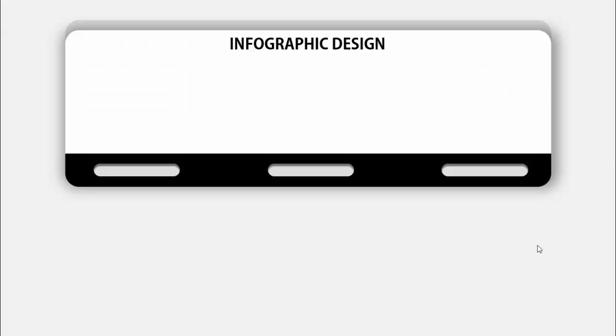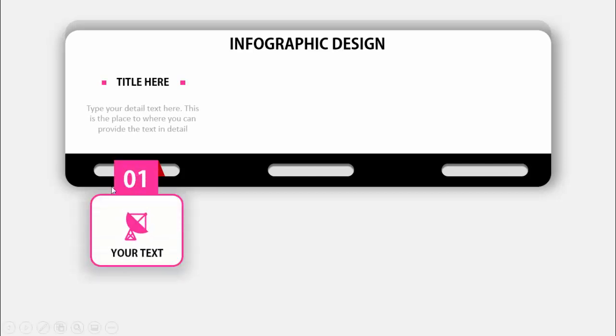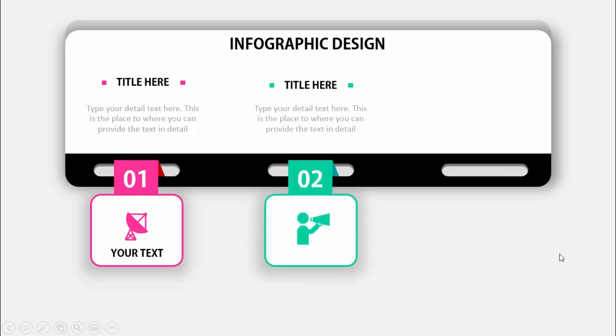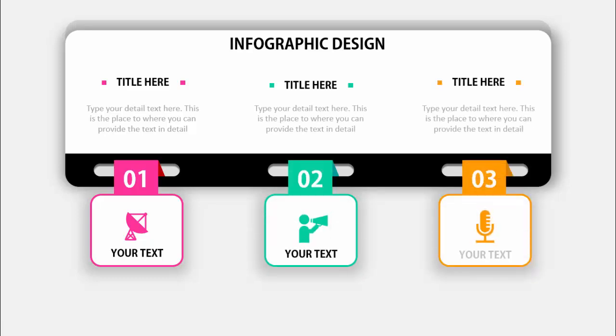Hello and welcome to my YouTube channel Powerpoint University. In this tutorial I'm going to show you how to create a three steps or three options infographic slide in PowerPoint. When I click, it will show you the first title with the detailed text and I have added an icon with some text here, and then when I click the second title or second option will appear, and then the third option will appear.